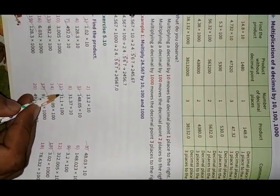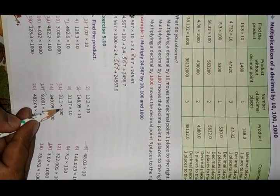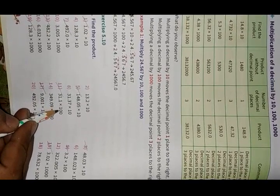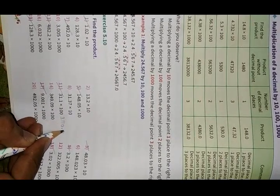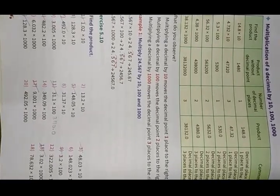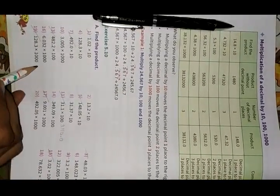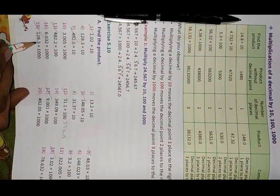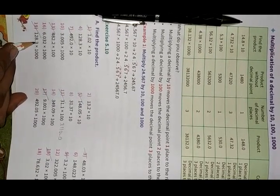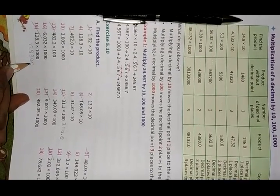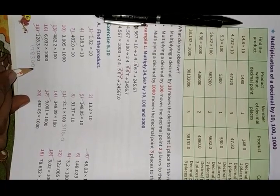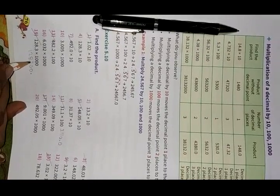The answer becomes 3110. After putting the decimal, there are no digits remaining, so we can write it as 3110.0 or simply remove the trailing decimal. For multiplication by 1000, we shift the decimal three places. For example, 128.3 into 1000 — only one digit is after the decimal, so we add two zeros to shift three digits, giving 128300.